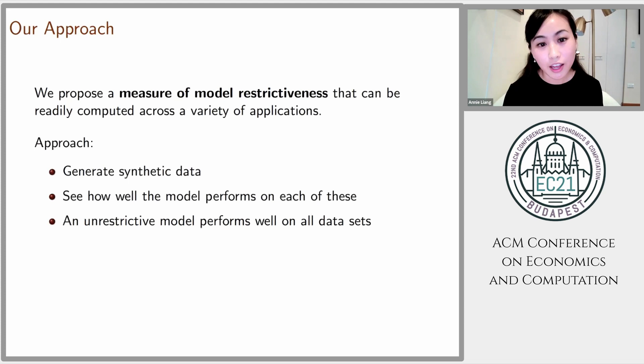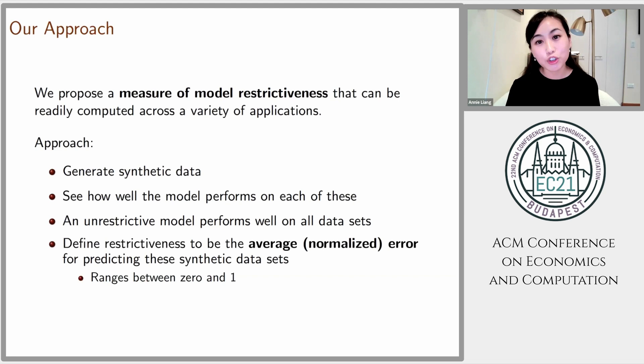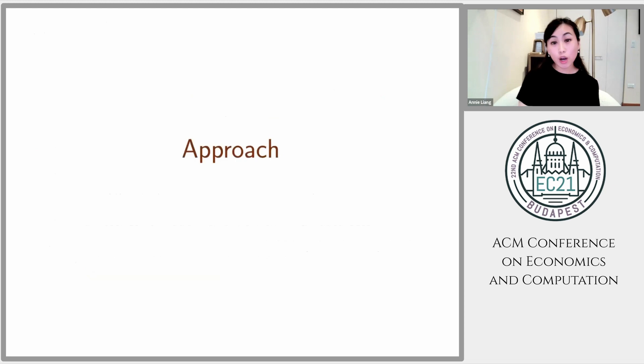We propose such a measure. At a high level, what we're going to do is generate a bunch of synthetic data sets and look at how well the model performs on each of these synthetic data sets — understanding that an unrestrictive model will perform well not just on the real data, but also on the synthetic data. Our measure of restrictiveness is roughly the average normalized error of the model across these synthetic data sets, normalized to range between zero and one. Now I'll describe the approach in a more general setting, then loop back to the motivating example and answer the question of how restrictive CPT actually is.